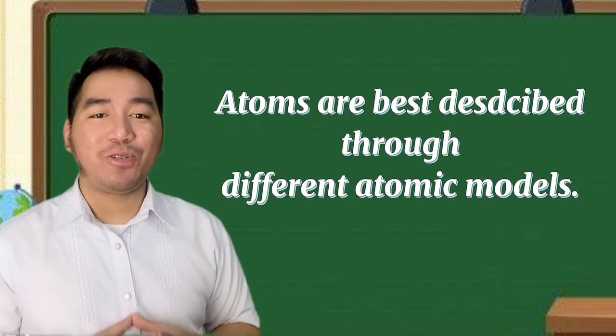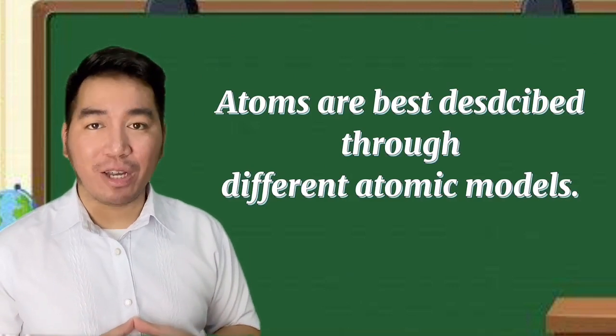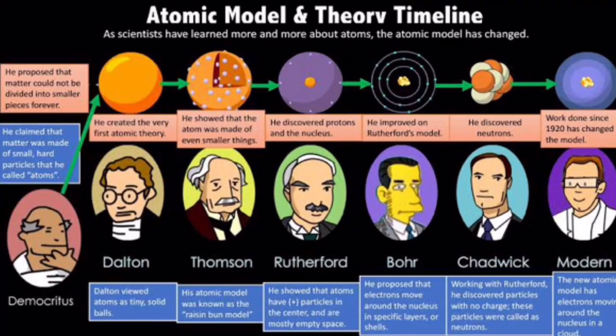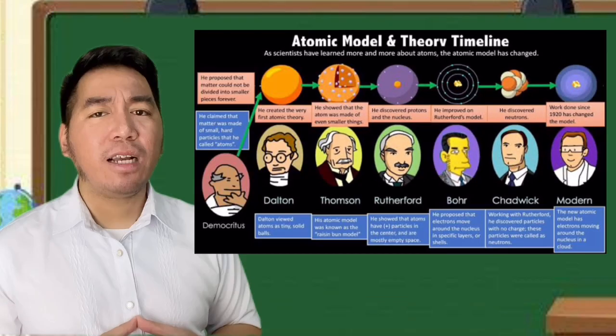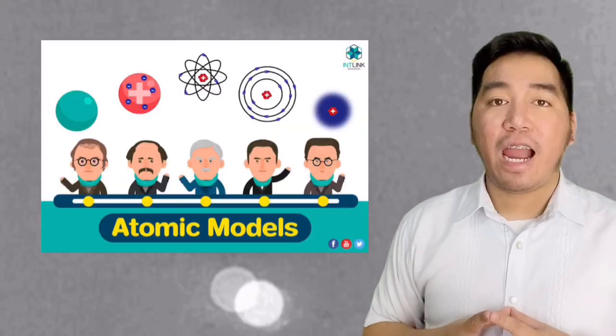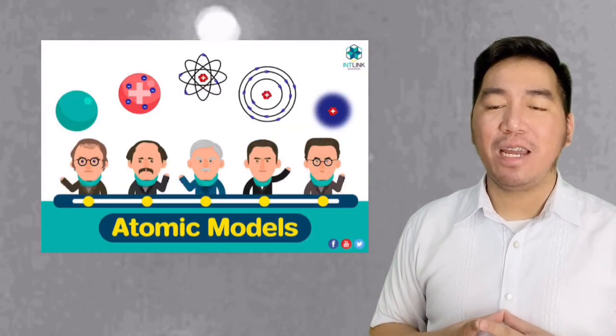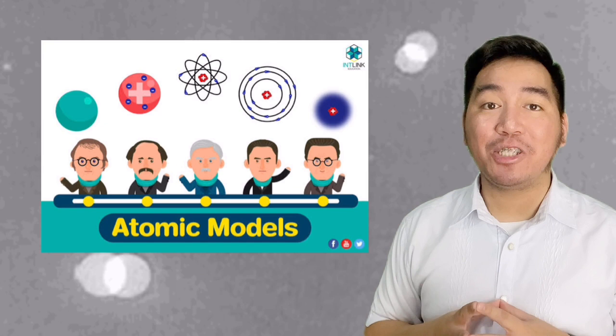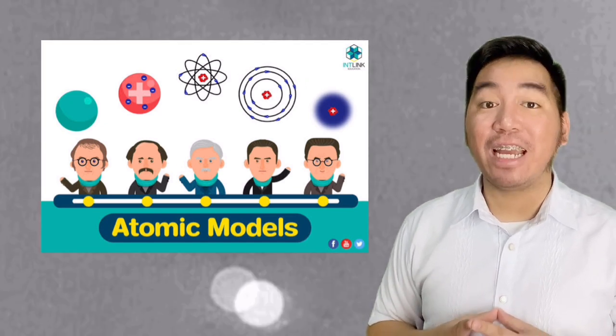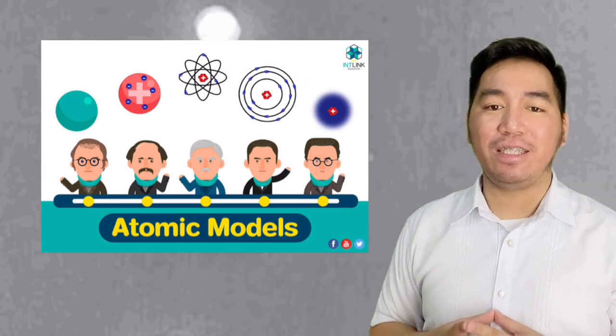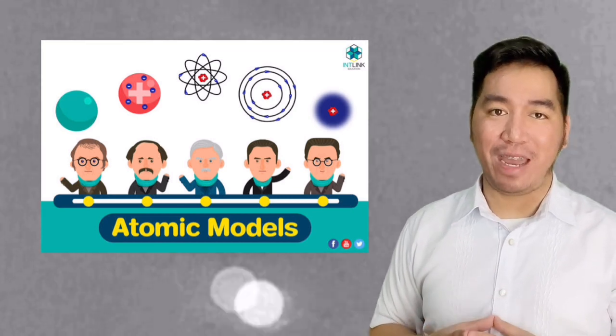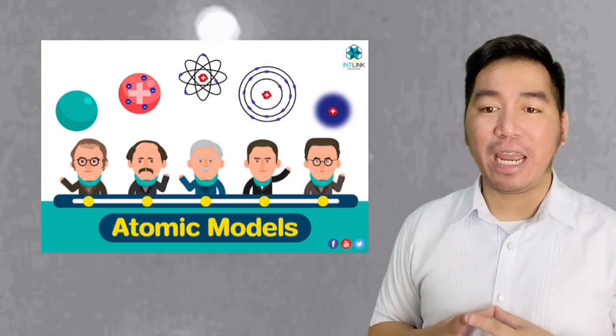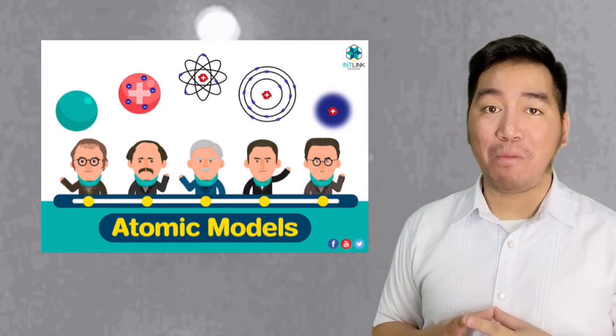Atoms are best described through different atomic models. After a series of experiments and observations, models have revealed the composition of an atom. After Dalton's atomic theory, more scientists became interested in the discovery and development of new methods and equipments that could further prove the nature of matter. The scientists were able to confirm the existence of subatomic particles. In 1897,